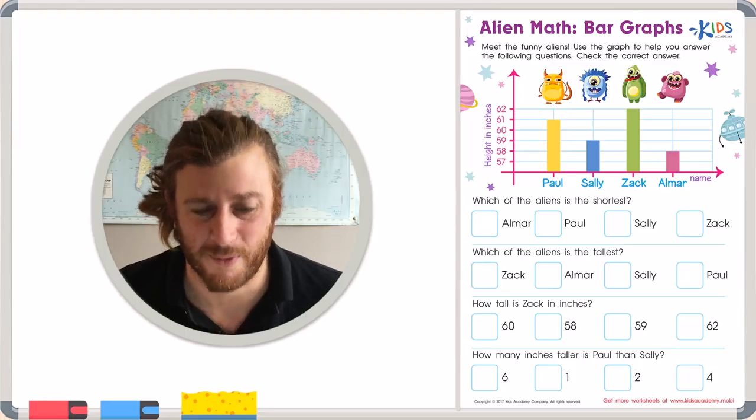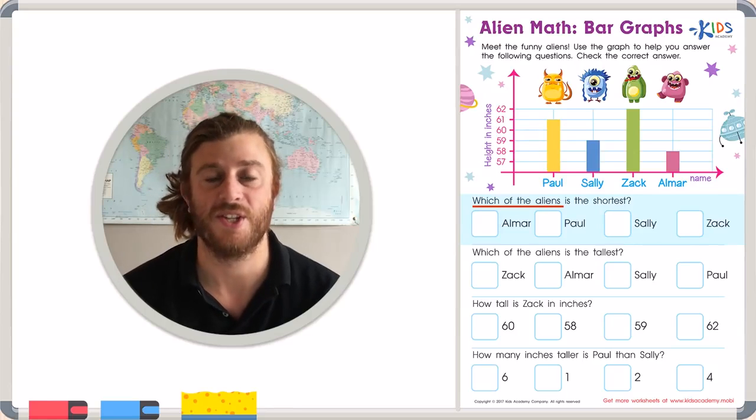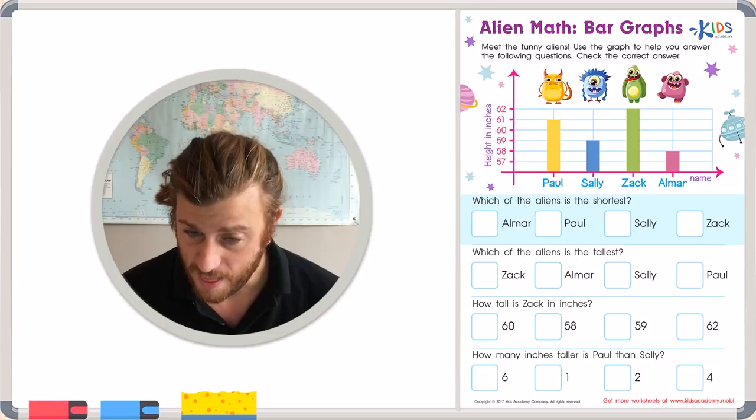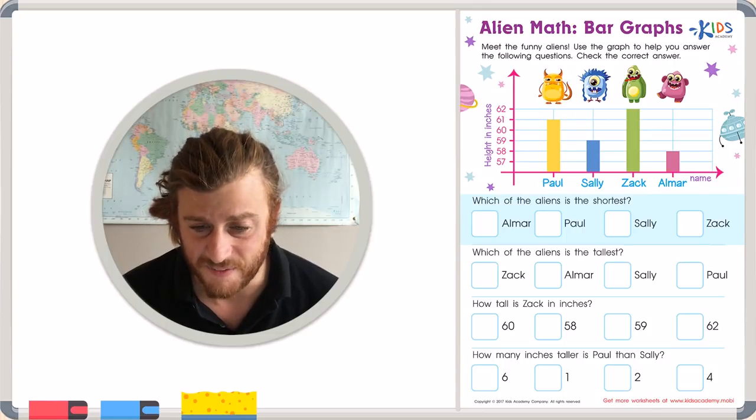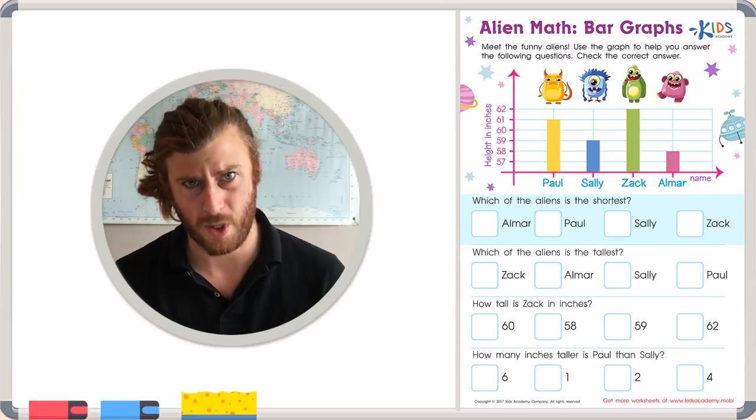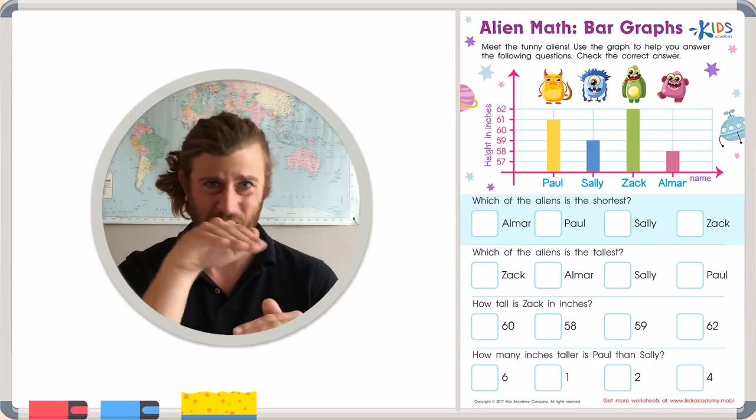Let's get started with the first question. The first question asks us, which of the aliens is the shortest? Well, I also noticed that the height starts at 57 and ends at 62. So the shortest alien is going to be the one with the smallest graph that's closest to 57.